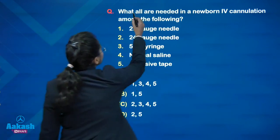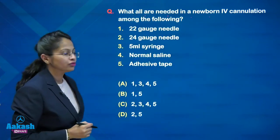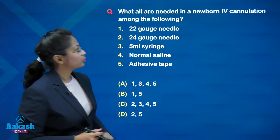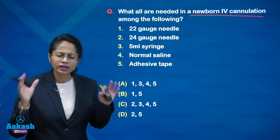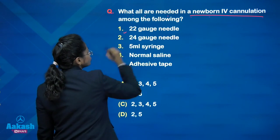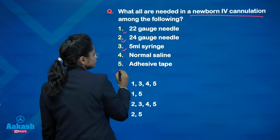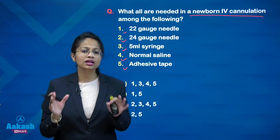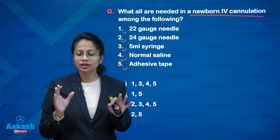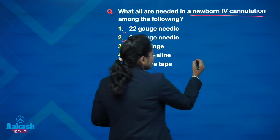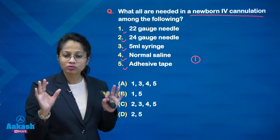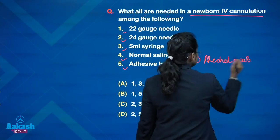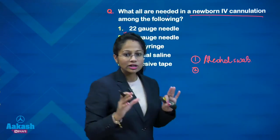What items are needed for IV cannulation in a newborn? This is a very practical, common-sense-based question — imagine you are posted in the nursery during internship. The options are: 22-gauge needle, 24-gauge needle, 5 ml syringe, normal saline, and adhesive tape. First, you need an alcohol swab to clean the skin. Then you need the cannula — in newborns you use 26-gauge or 24-gauge cannulas.